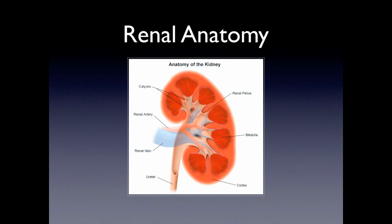In detail, you can see that you have the cortex, the medulla, the renal pelvis, the calyces, and the collecting system leading to the ureters.